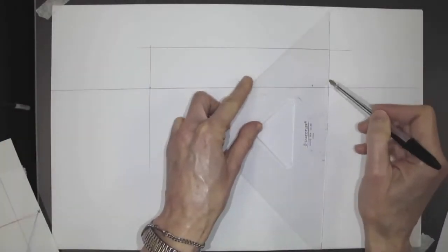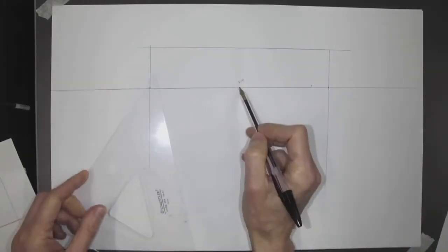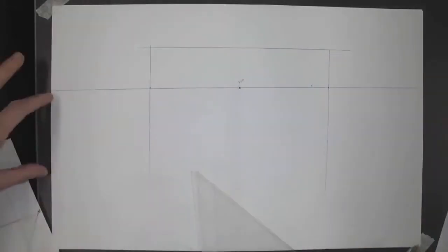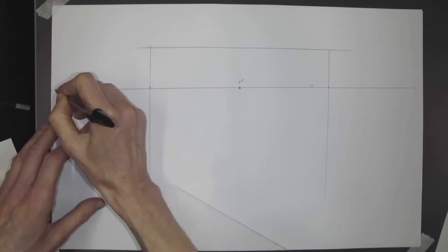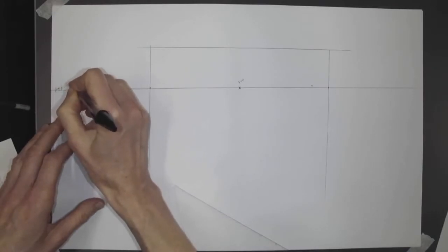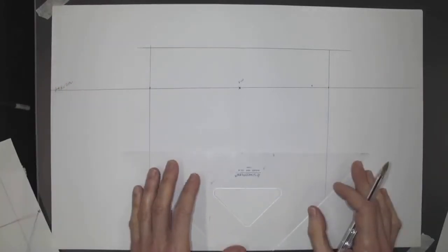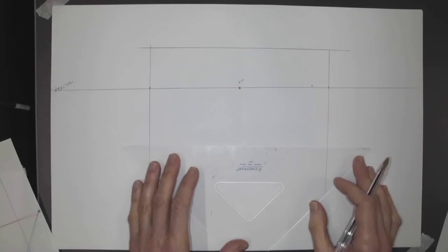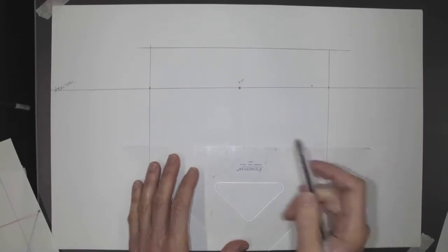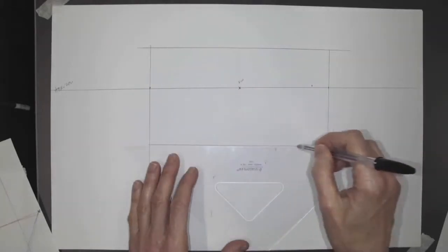We folded our paper in half to find where the vanishing point is. The horizon is about a third of the way down on the paper. There's always more space below eye level than there is above, so that we're standing to look at things. That's the impression we want to make.